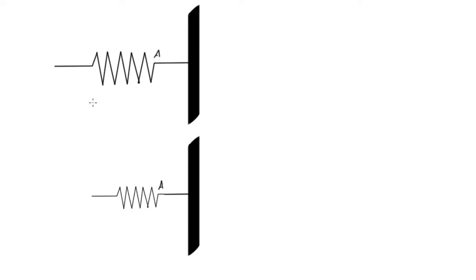So let's say maybe it has an undeformed length of one meter, and then what we want to do is we want to put some force on it. We'll call this force F, and then we're going to compress it with that force to some other length. We'll say that now the length of the spring is 0.6 meters.